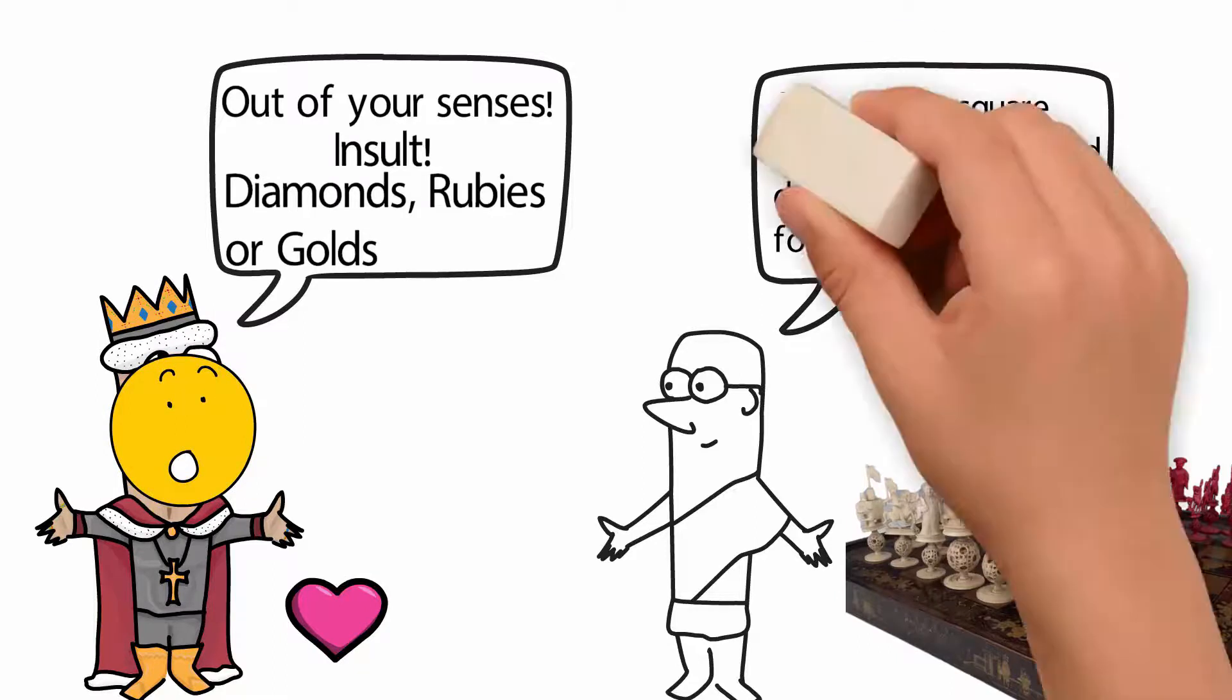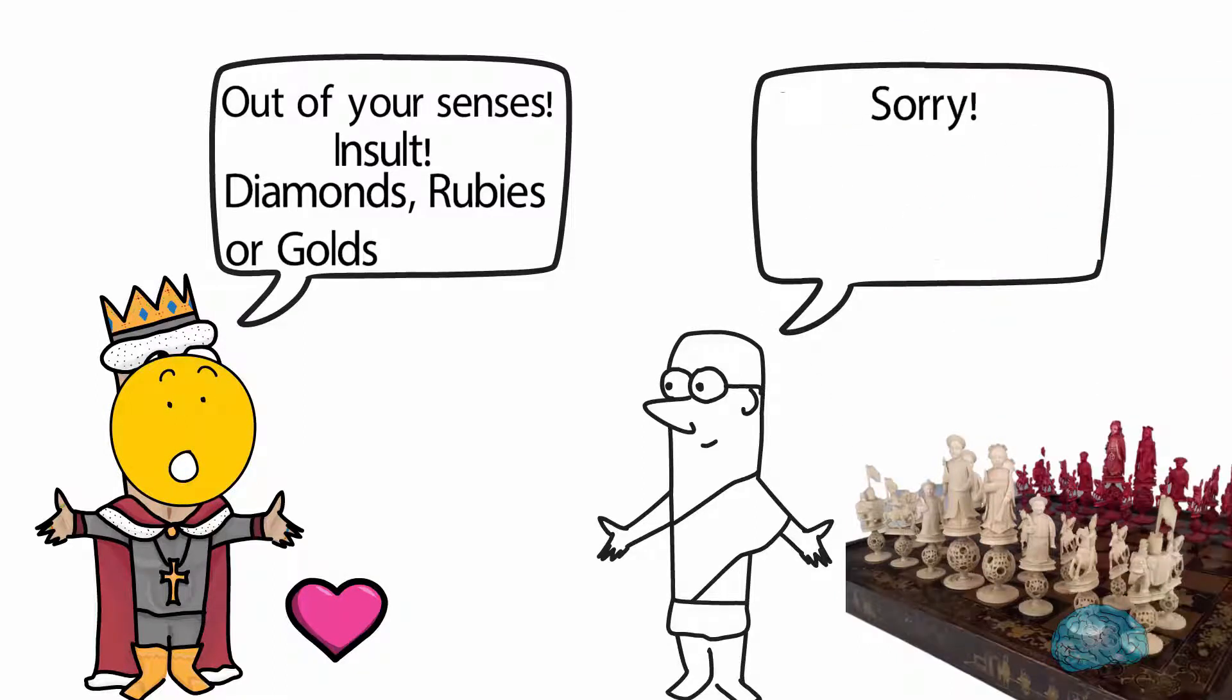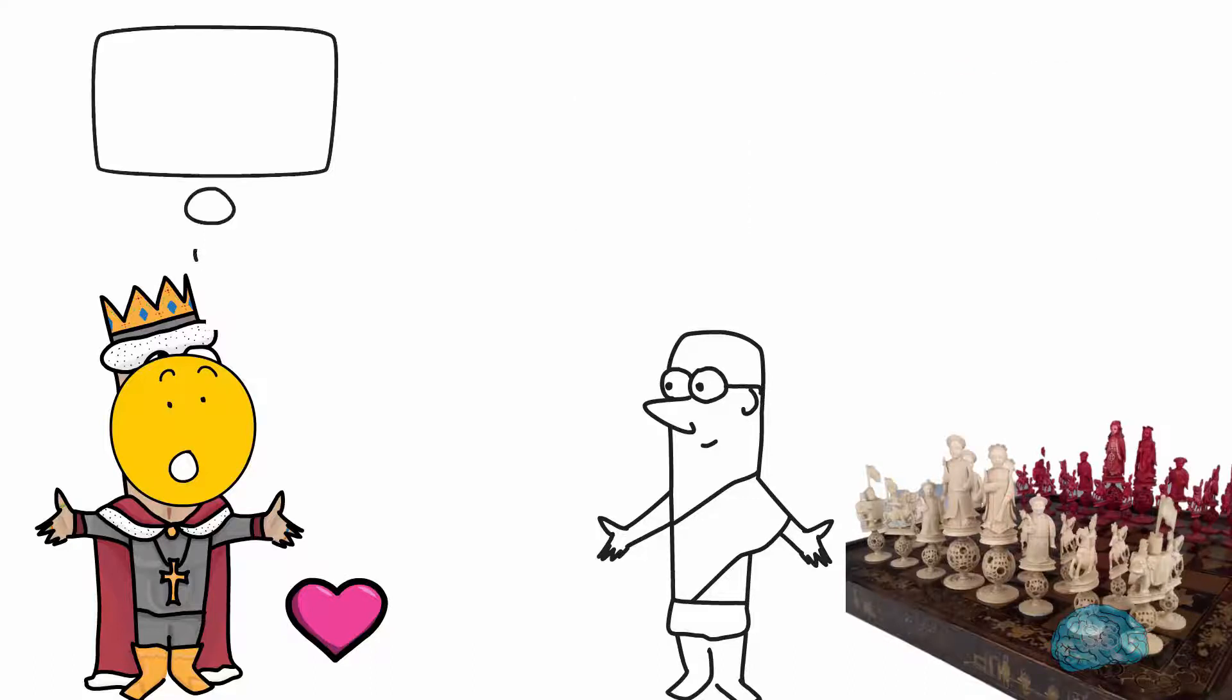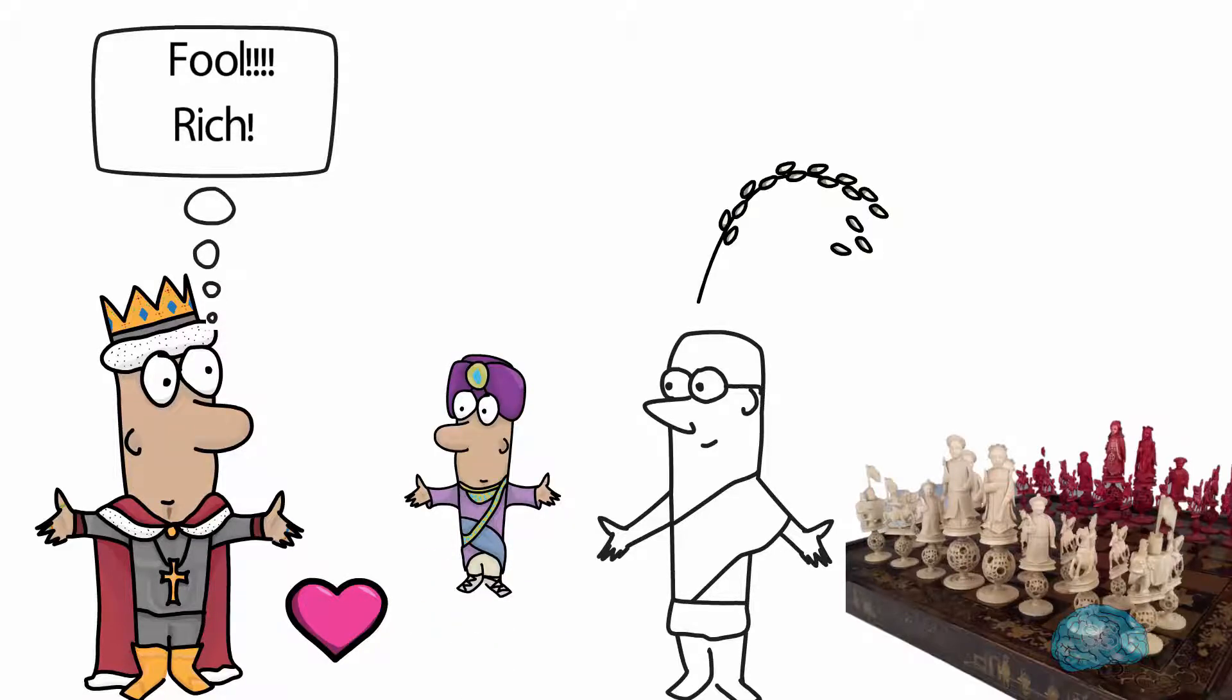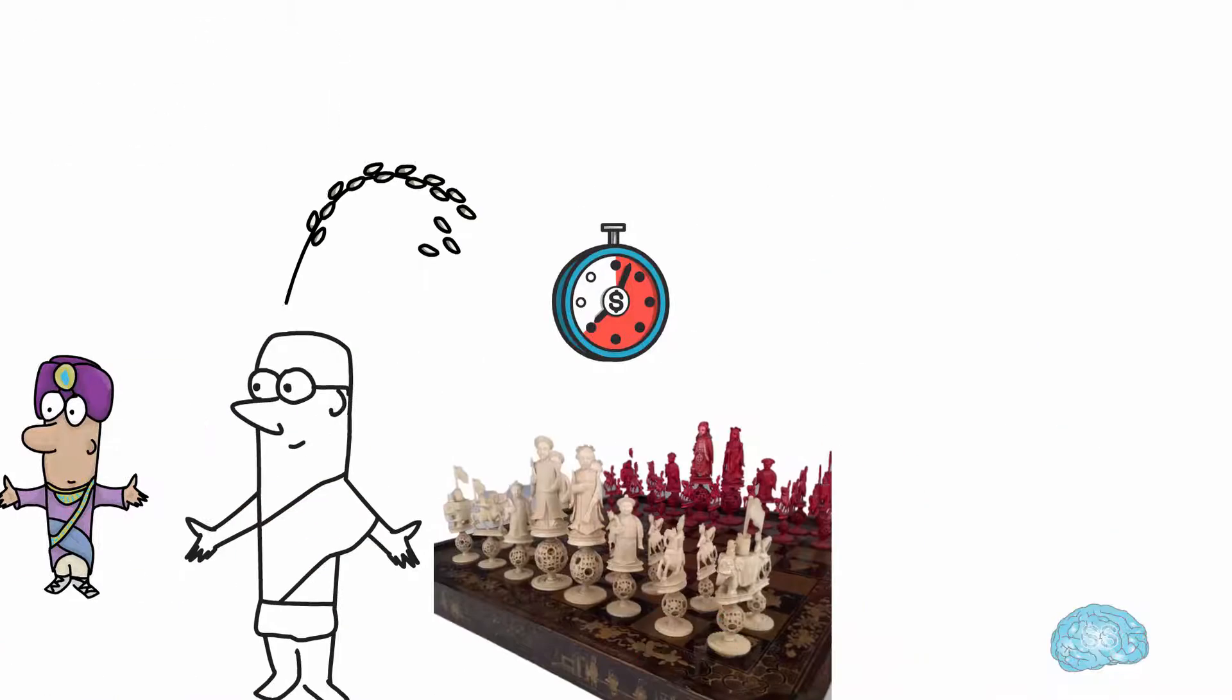To this, the person said: Sorry for hurting your feelings, Your Highness, but I will be grateful if you only give me what I asked for. Upon hearing this, the king thought: What a fool he is, doesn't want to get rich. And ordered his minister to give what this person asked.